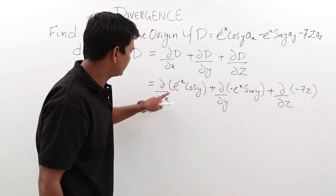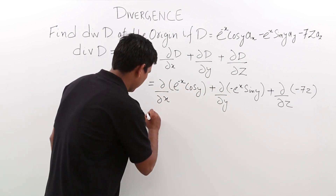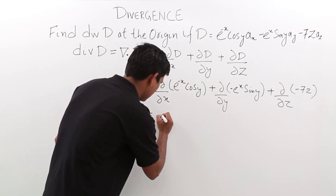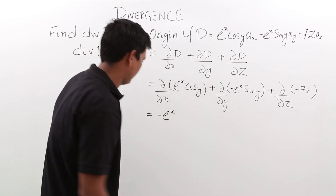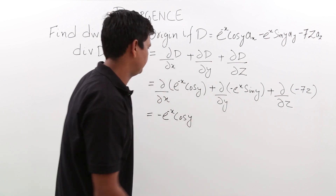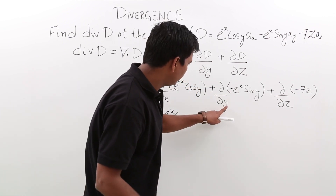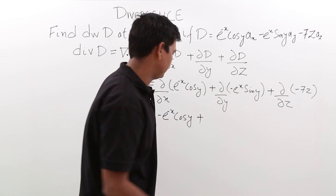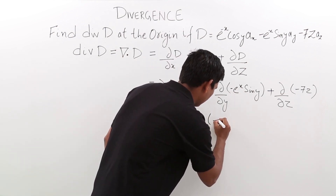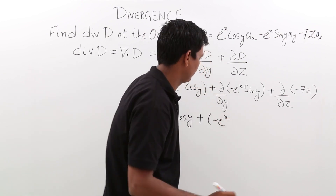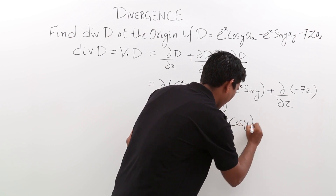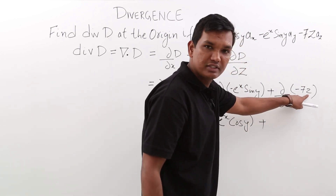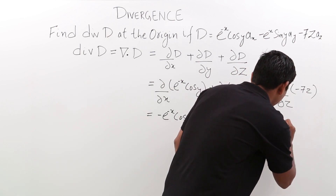This first term is a partial differentiation with respect to x, so cos y remains as a constant. The differentiation of e to the power minus x is minus e to the power minus x, giving minus e to the power minus x times cos y. In the second term, minus e to the power x is treated as a constant, so we differentiate sin y to get cos y. For the third term, the differentiation of z is 1, so that comes out to be minus 7.